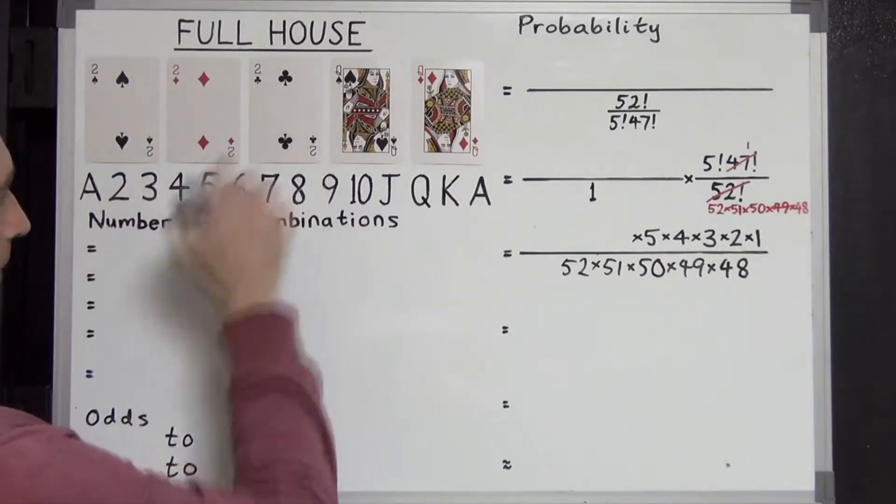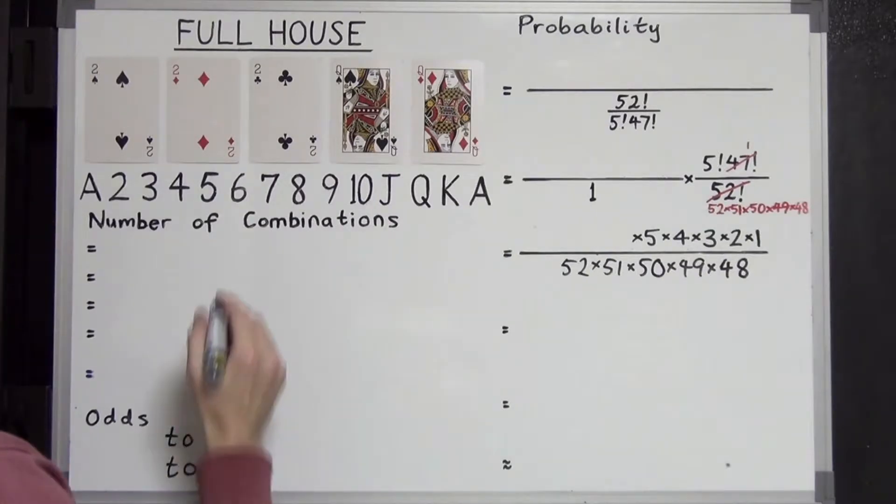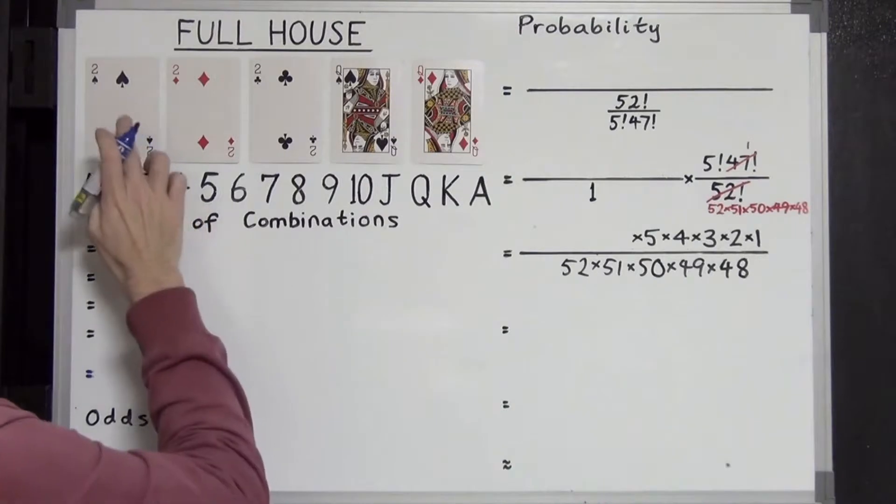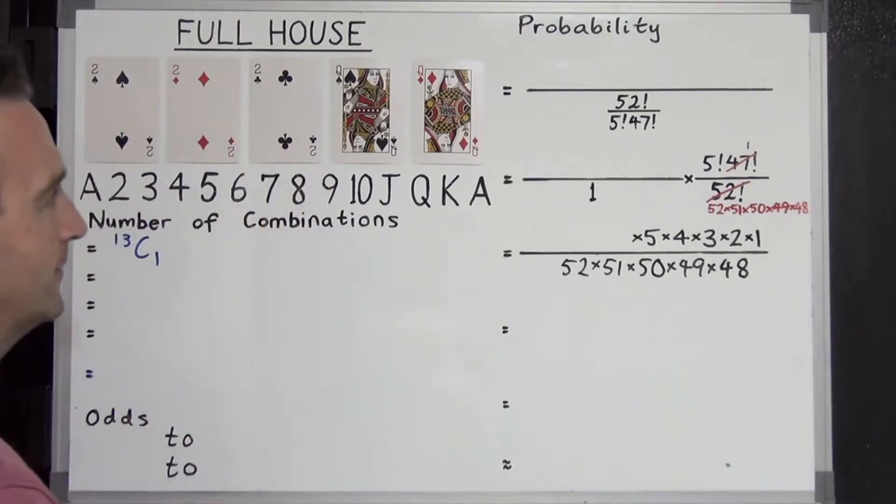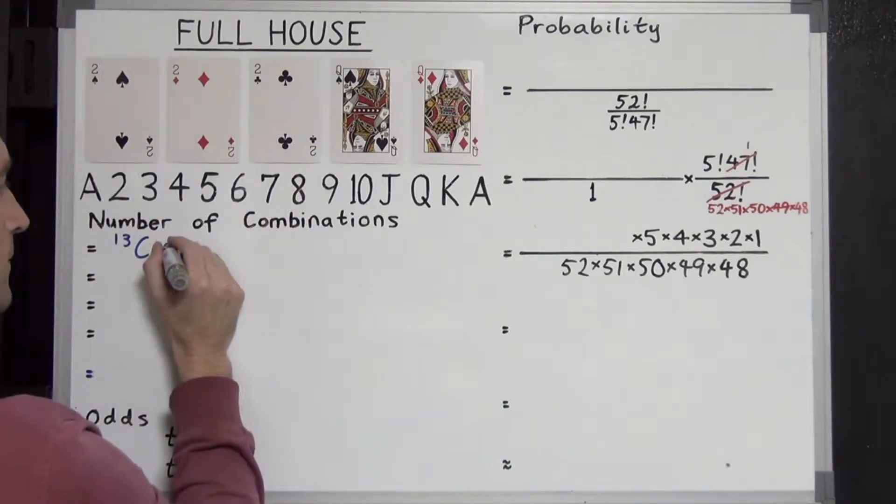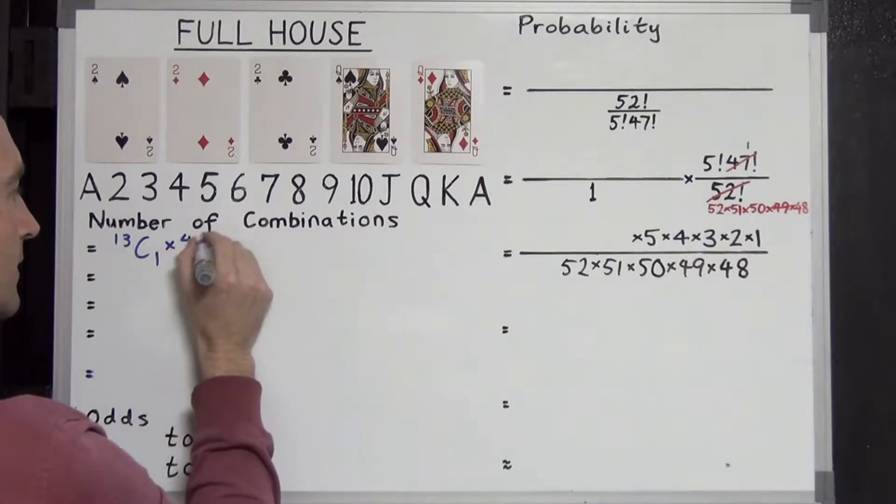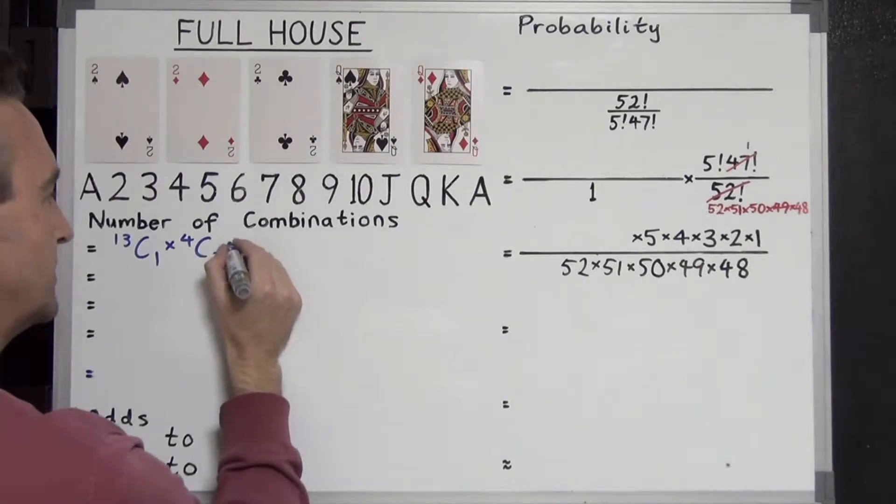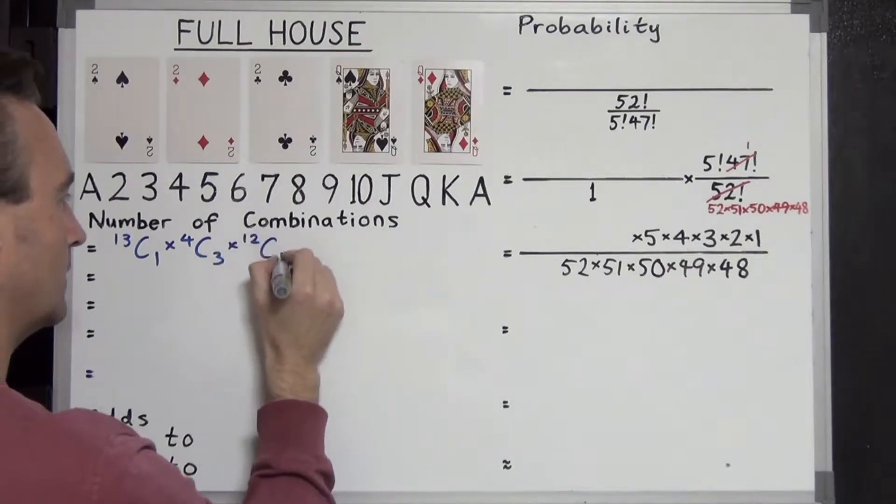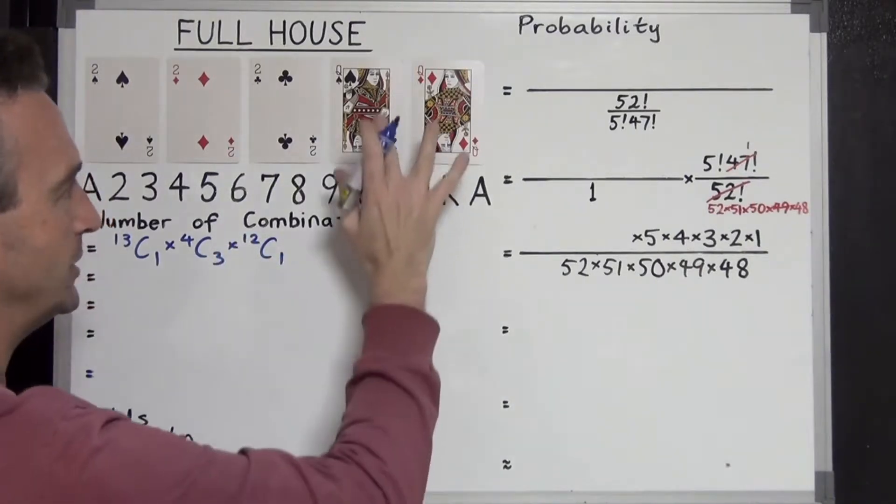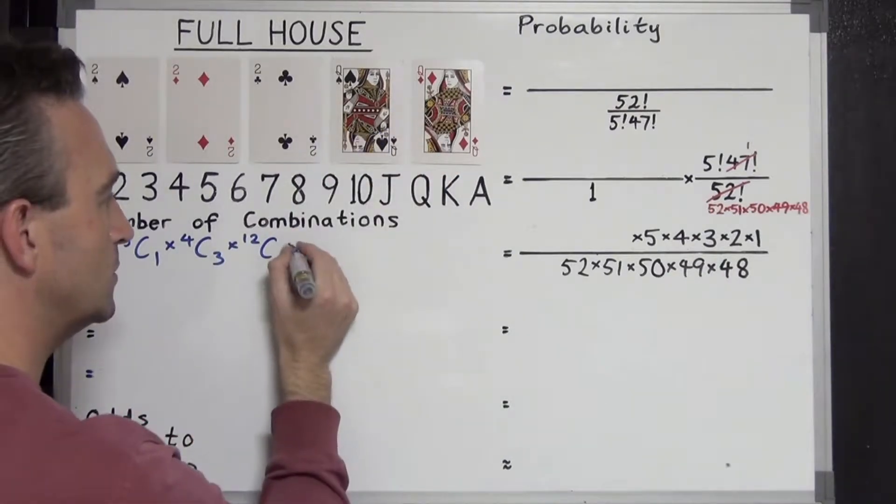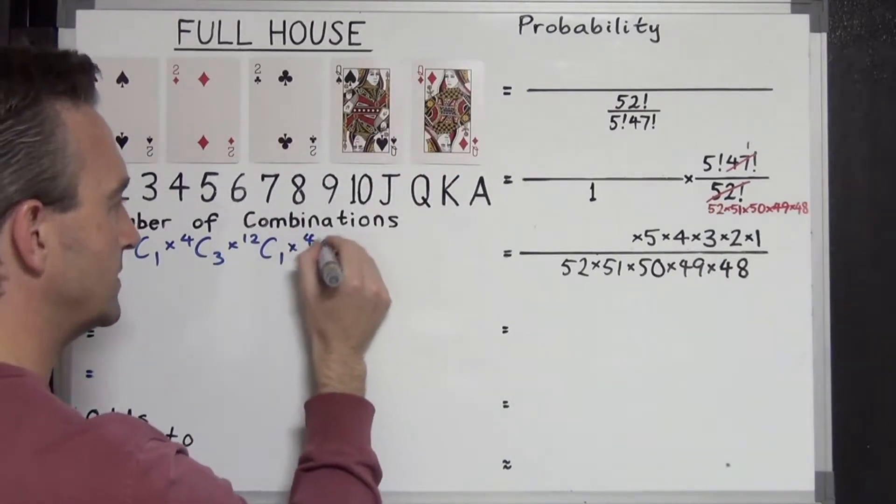First thing we need to choose our first rank which we have 13 to choose from, 13C1. And then we're going to choose three out of the four available cards, so 4C3. We now choose our second rank of which there are 12 left, that's 12C1. And within those we're going to choose two out of the four cards available. So here we've chosen two queens where we could have had a choice of four, 4C2.